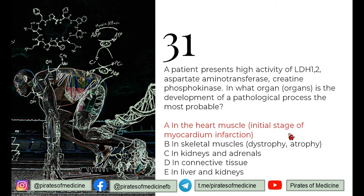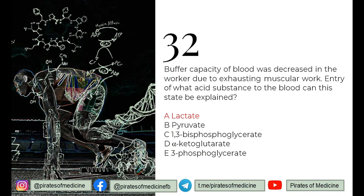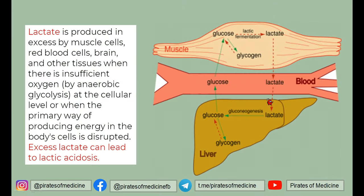The 32nd question: the buffer capacity of the blood was decreased in a worker due to exhausting muscle work. Entry of what acid substance into the blood can explain this state? When you do excessive exercise, your body produces lactate — the muscle cells, RBCs, the brain, and other tissues produce lactate when there is insufficient oxygen for glycolysis. This process is known as anaerobic glycolysis. Excess lactate in the blood can lead to lactic acidosis, which was evident in our patient.